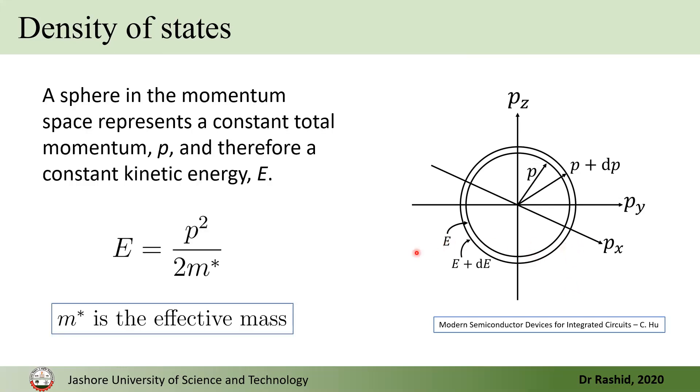Now, we know that the momentum is related to the kinetic energy with this expression, E equals P square by 2m. Here, we have used m star, that is the effective mass, not the regular electronic mass, because when the electrons move in the band, it looks like that it is a particle having this mass. That's why we use this m star, and we call it effective mass.